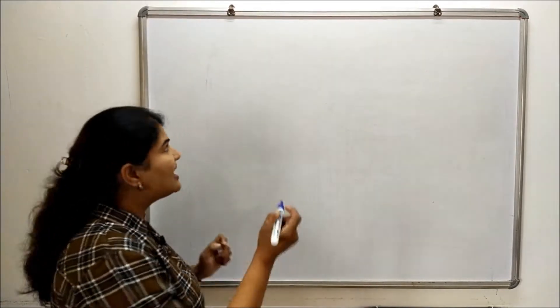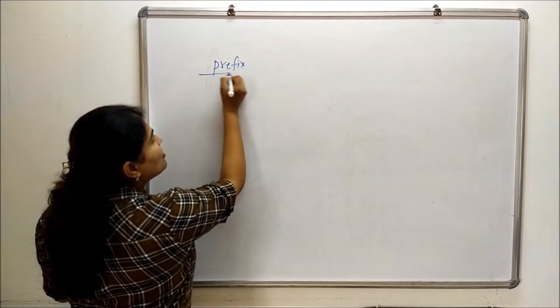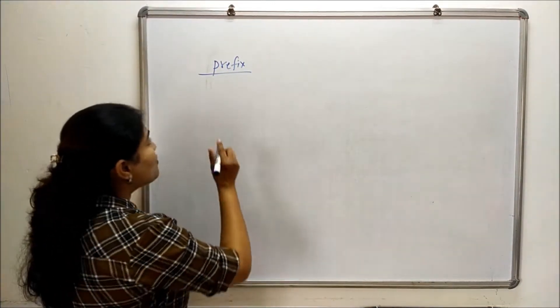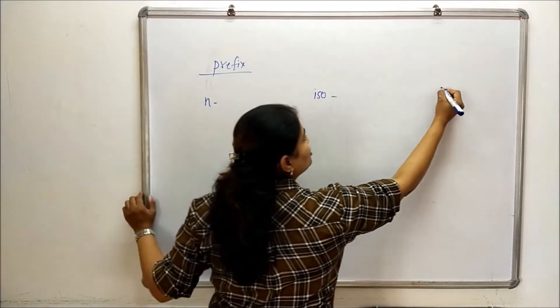n-iso-neo are actually the prefixes used in the common system of nomenclature of organic compounds. Now when to use n, when to use iso, and when to use neo.